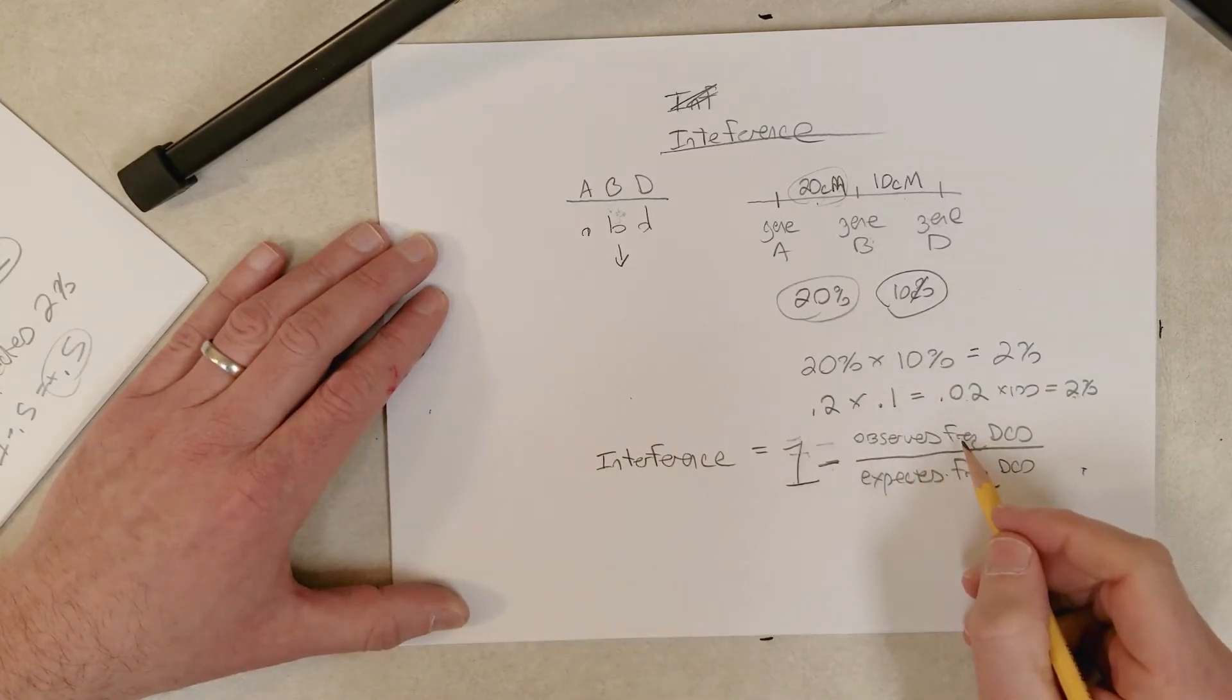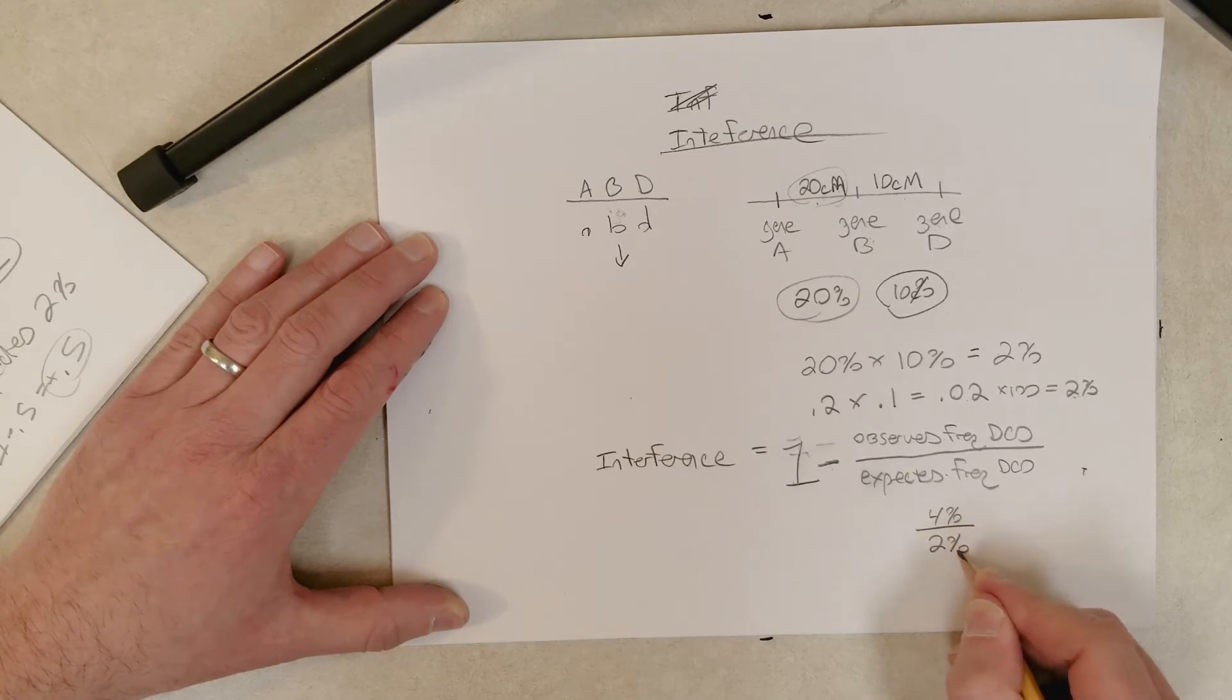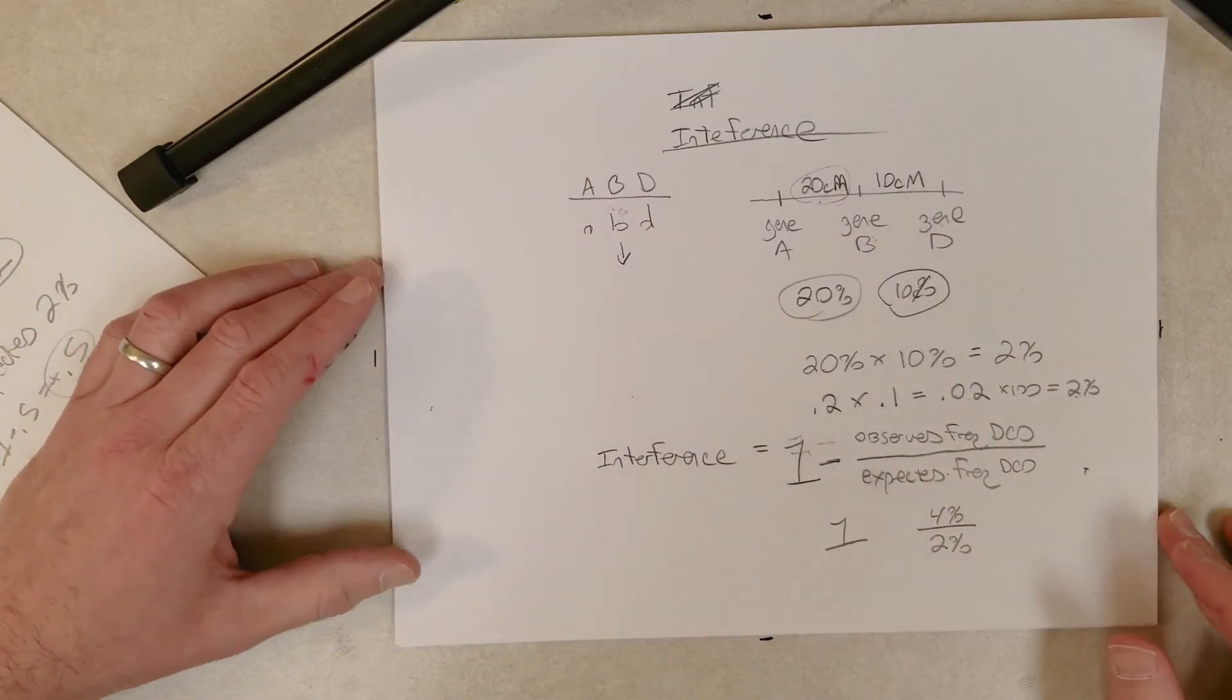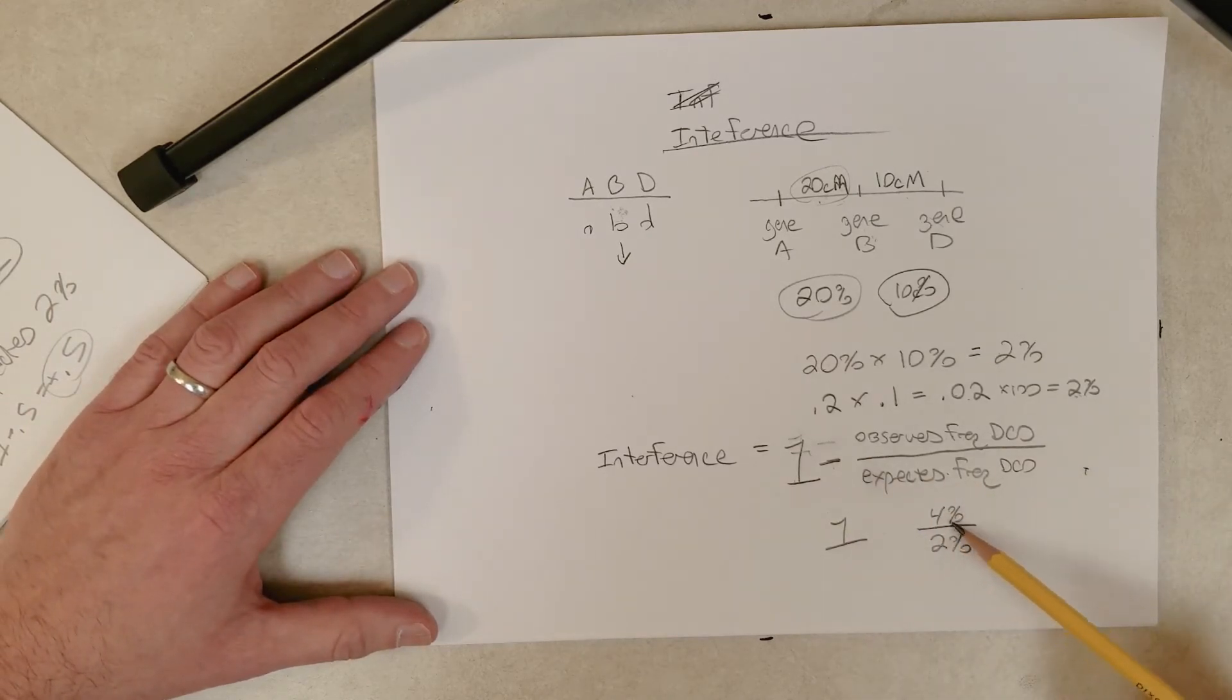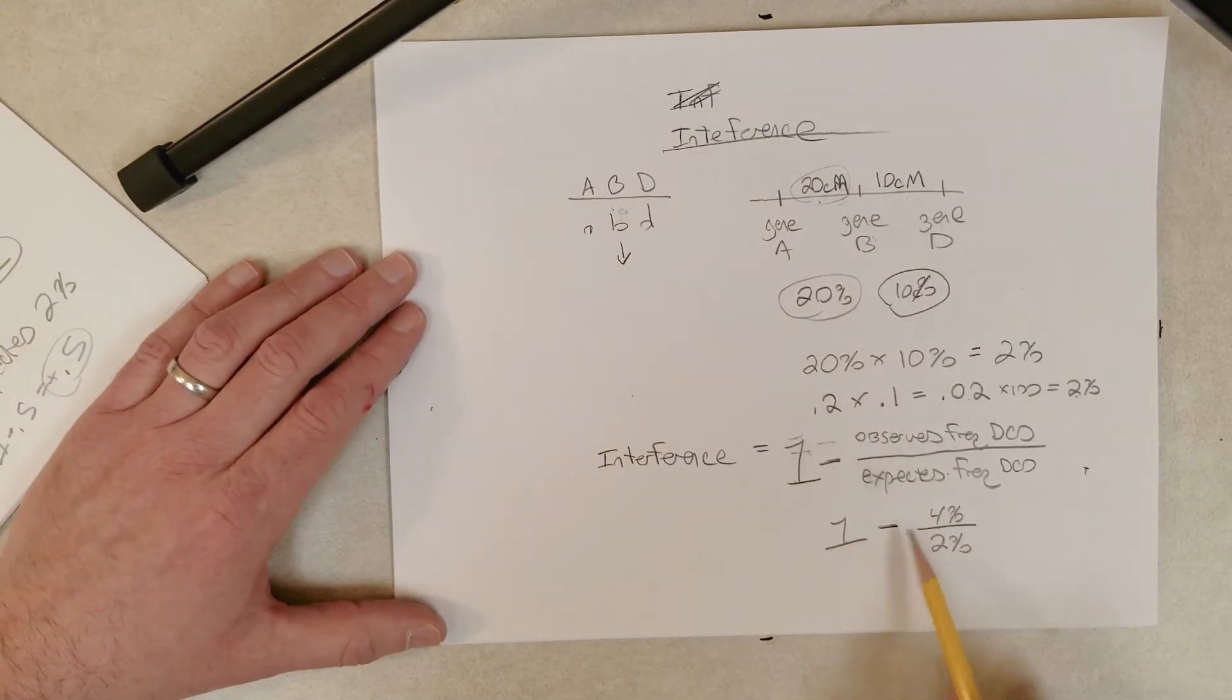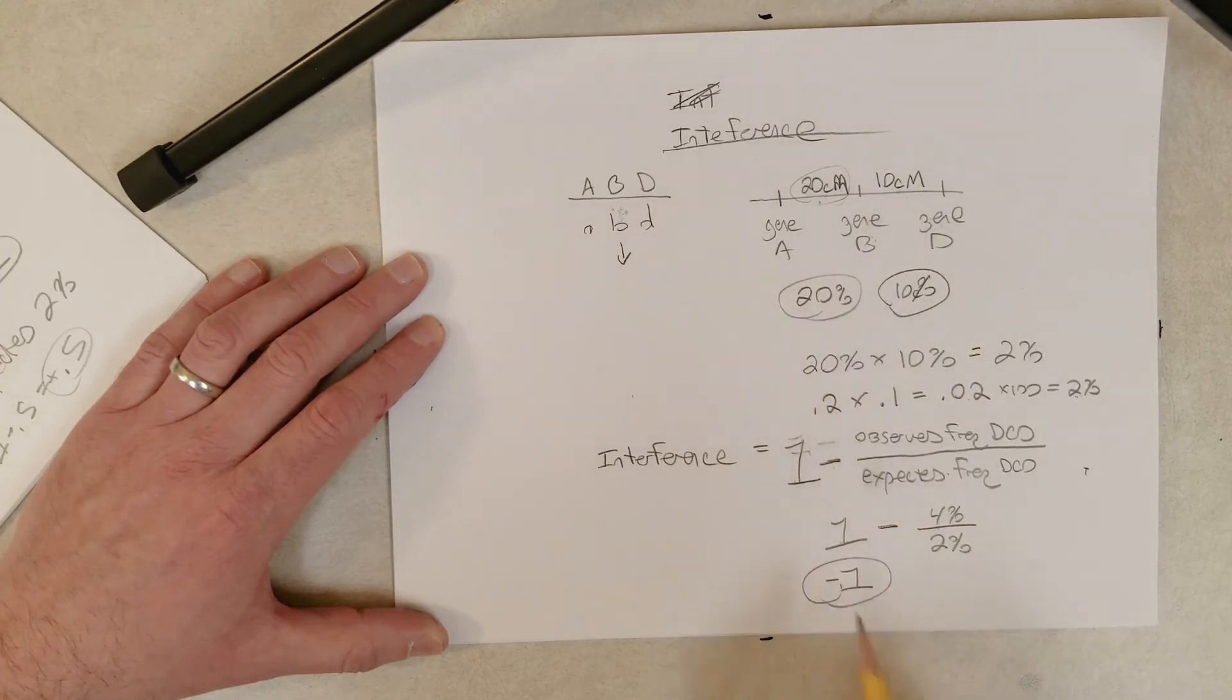Let's assume we observed 4% double crossovers, but we only expected 2%. What do you mean you observed double crossovers? You did your genetic cross, and you're counting up the different phenotypes in the progeny or offspring, and you find that 4% of the progeny must have resulted from a double crossover. But we know the distances, and there should have only been 2%. What's going on here? We see interference, and we can measure that with this calculation. So 1 minus 4 divided by 2 is 2, so the interference is negative 1. This is negative interference.